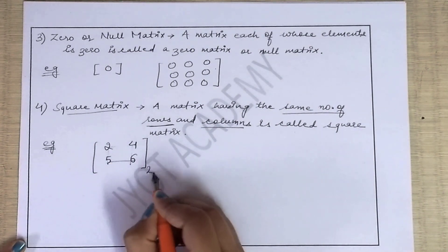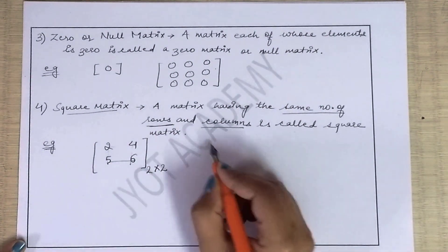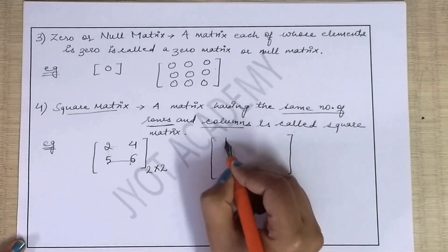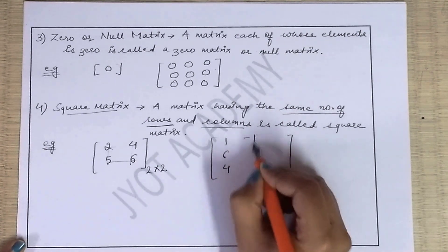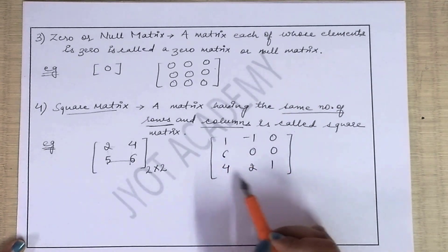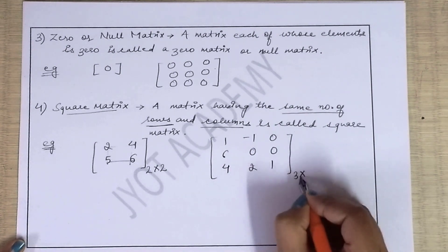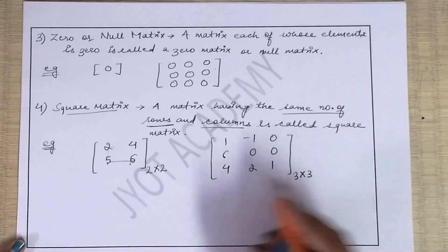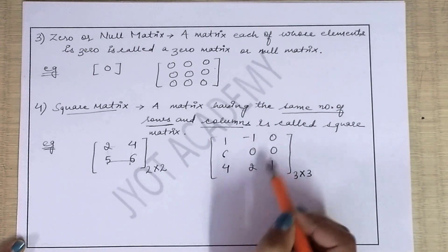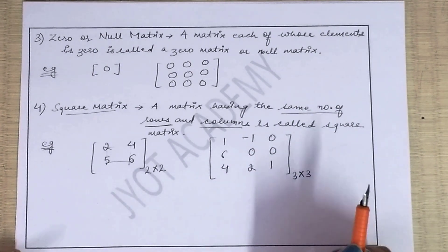Another example: [1, 6, 4; -1, 0, 2; ...] — is matrix ka order hai 3×3, that means we have three rows and three columns in it. So isse bolenge square matrix, where you have both same numbers of rows and same numbers of columns.